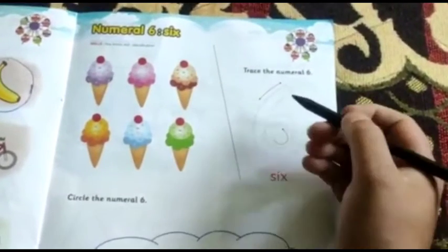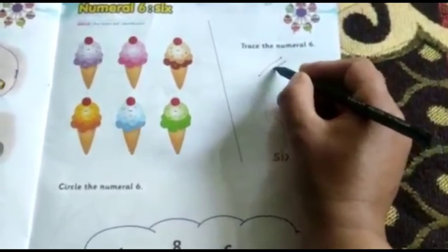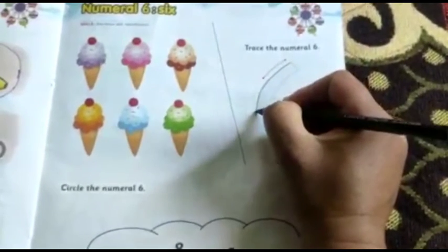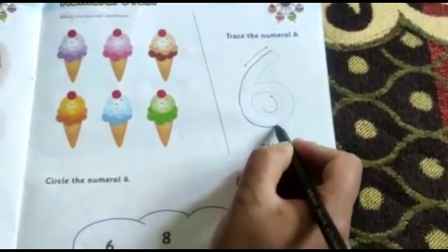What you have to do, you have to trace the numeral 6 like this. This is a dotted line. You are going to take the pencil from this way in dotted lines, like this.